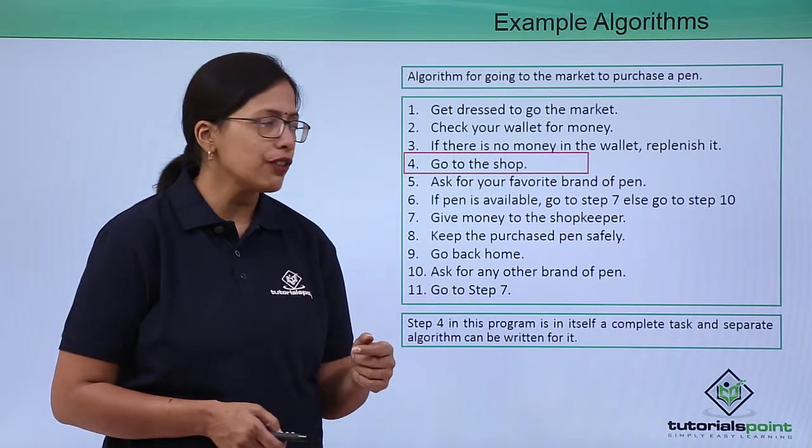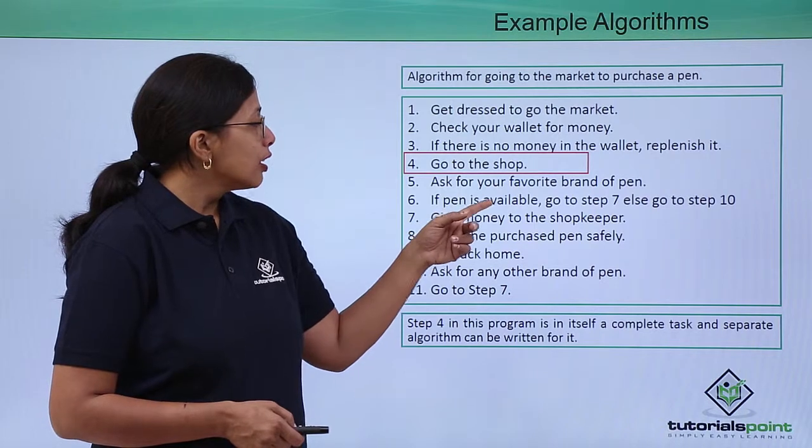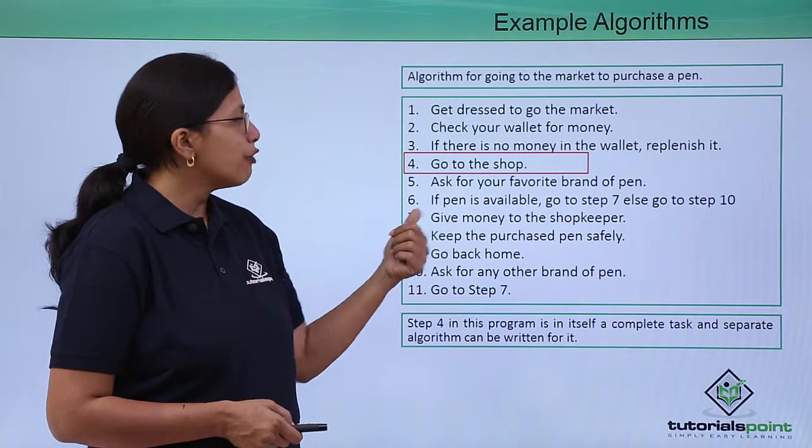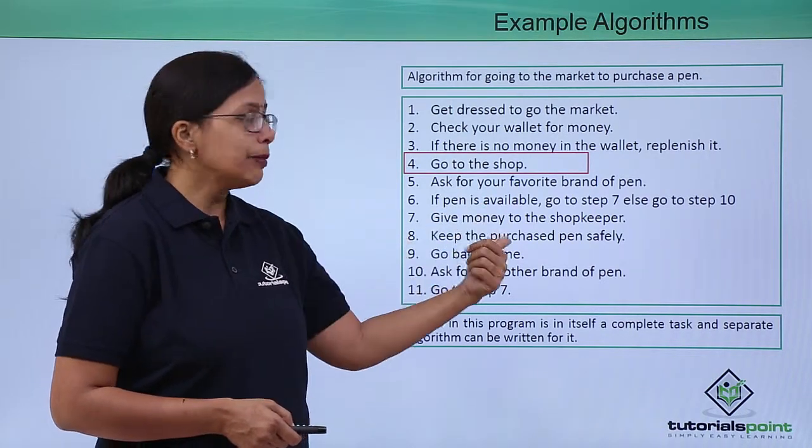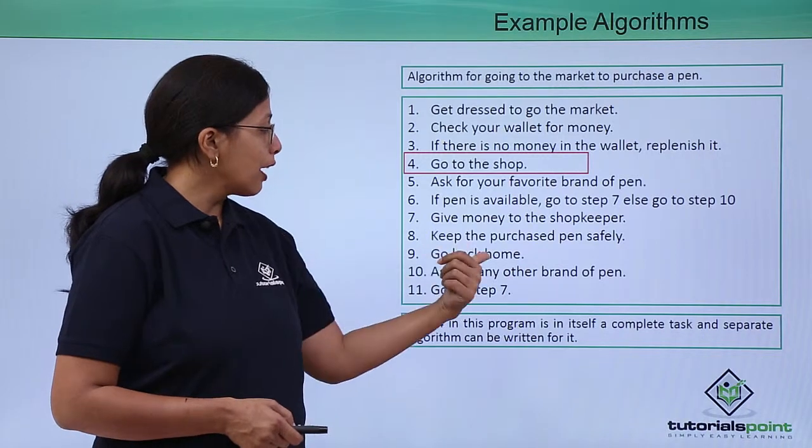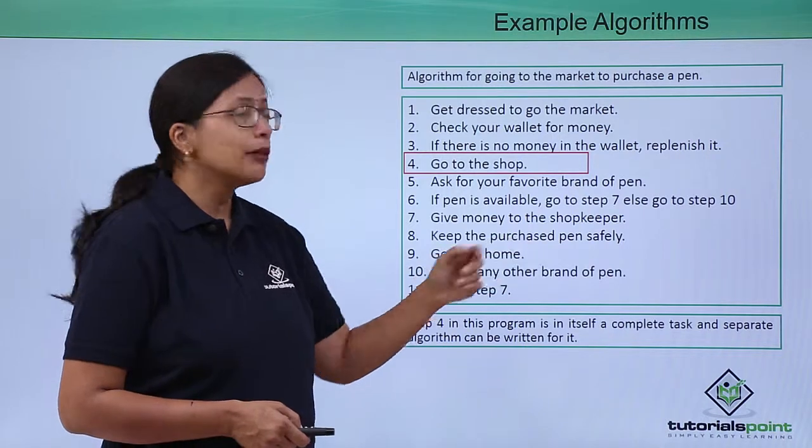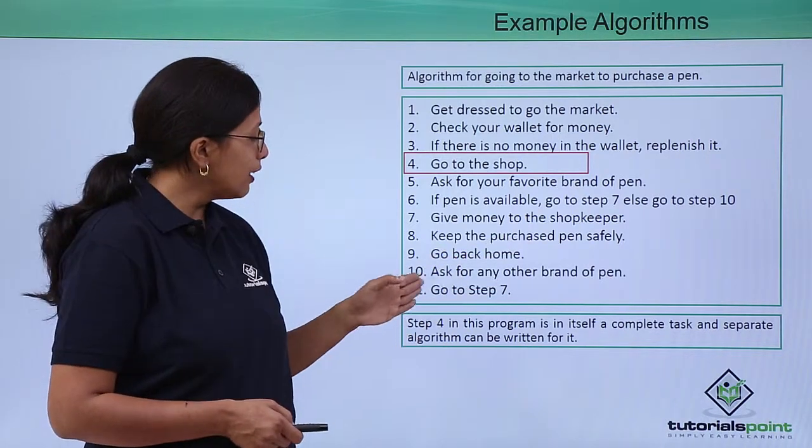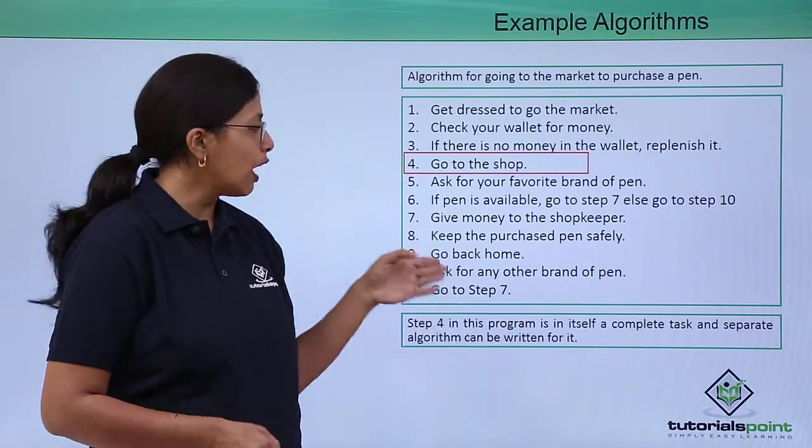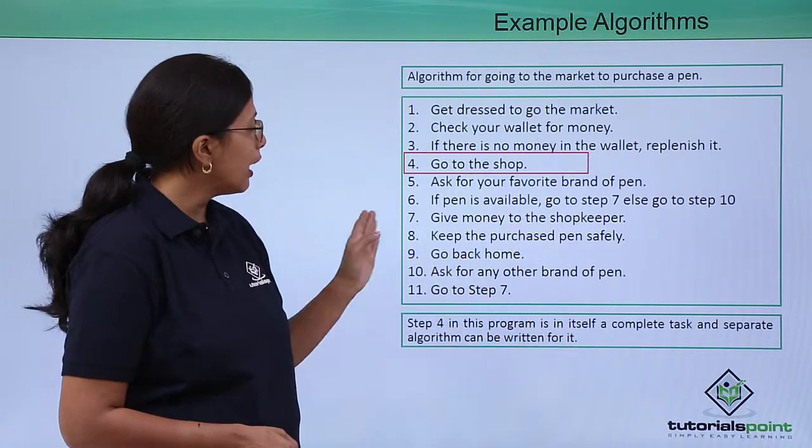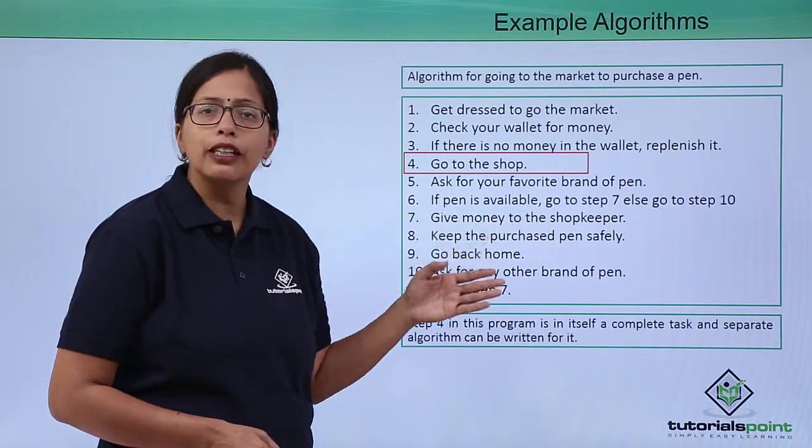Step 6: If pen is available, go to step 7, else go to step 10. Again, a control structure which we have already discussed in a previous video. What does step 7 do? Give money to the shopkeeper, keep the purchased pen safely, go back home. What does step 10 do? Ask for any other brand of pen and then again go to step 7.